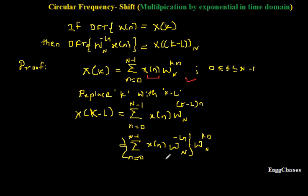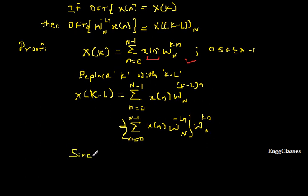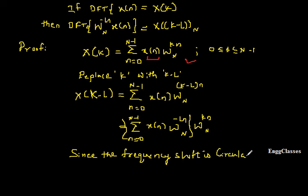Comparing the two expressions — same summation limits, same W_N to the power kn — the only difference is that in place of x[n] we now have x[n] times W_N to the power minus Ln. Hence this must be the DFT of x[n] times W_N to the power minus Ln, equal to X[k minus L]. Since the frequency shift is circular in nature, we write this as X double-parenthesis (k minus L), indicating circularity.